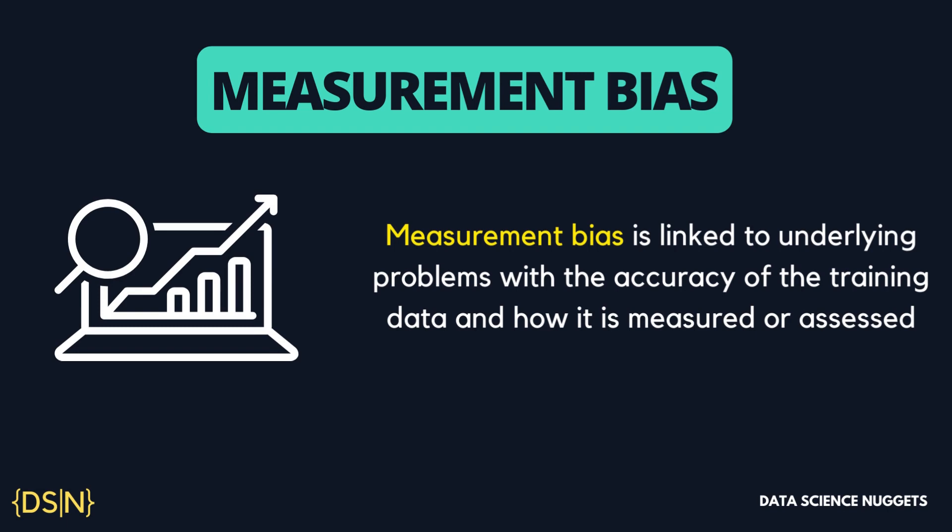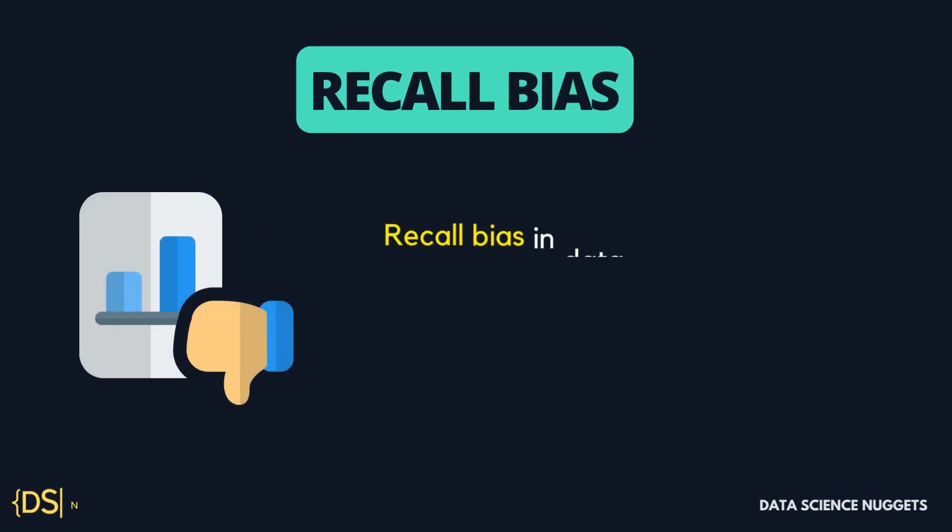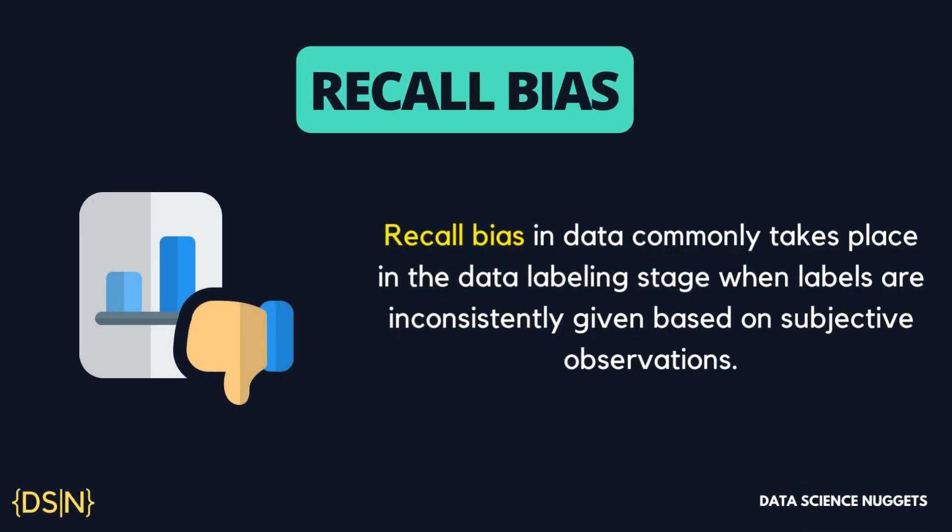Next is measurement bias. Measurement bias is linked to underlying problems with the accuracy of the training data and how it is measured or assessed. An experiment containing invalid measurement or data collection methods will create measurement bias and biased output. For example, when testing a new feature on a mobile app available for both Android and iPhone users, if you perform the experiment only with a subset of iPhone users, the results can arbitrarily reflect that subset and thus introduce measurement bias into the experiment.